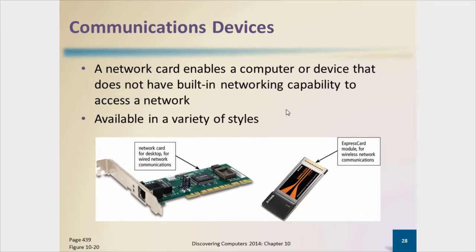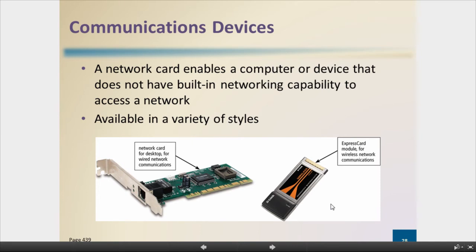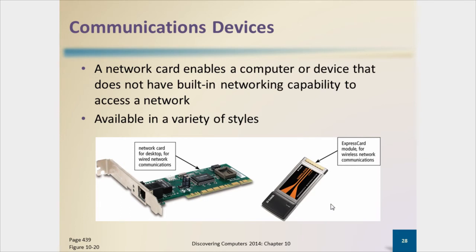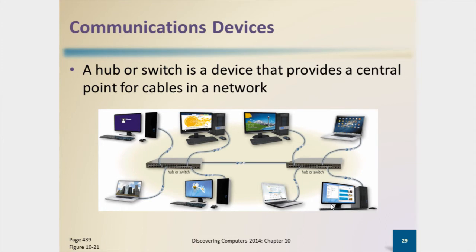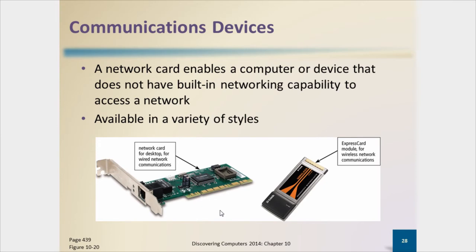On the computer side, assuming it's a wired connection, you've got a network interface card — an expansion card that plugs into an expansion slot on the computer, with the cable plugging in at the end. In many cases, the networking card is built onto the motherboard. If you have an older laptop without a built-in wireless card but with a PC Card or ExpressCard slot, you can add that functionality. You connect one end of a UTP — unshielded twisted pair — cable to the back of your computer.